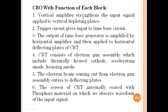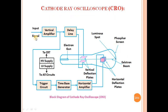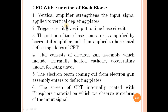The first block is the vertical amplifier. The vertical amplifier strengthens the input signal applied to the vertical deflecting plates. So the input signal is amplified by the vertical amplifier and then sent to the vertical deflecting plates.